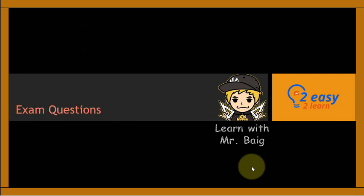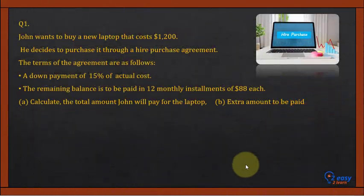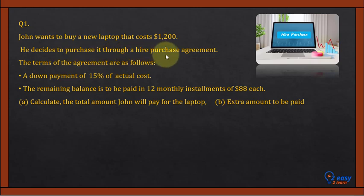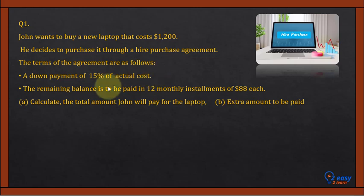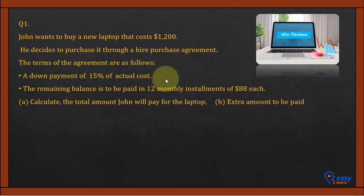Question 1: John wants to buy a new laptop that costs $1200. He decides to purchase it through a hire purchase agreement. The terms are: a down payment of 15% of the actual cost, and the remaining balance is to be paid in 12 monthly installments of $88 each. Part A: calculate the total amount John will pay. Part B: calculate the extra amount to be paid.